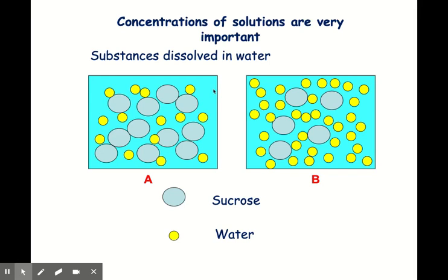Before we move on to diffusion properly, we need to understand what concentration is and how to spot high and low concentrations of substances. You've probably heard the word concentration before. If I asked you to make diluting juice really concentrated or really dilute, concentrated would mean lots of juice particles in the water — a high concentration. Dilute would mean a little juice and a lot of water — a much lower concentration. Concentration refers to how much of a particular substance there is in the total volume of a liquid or gas.